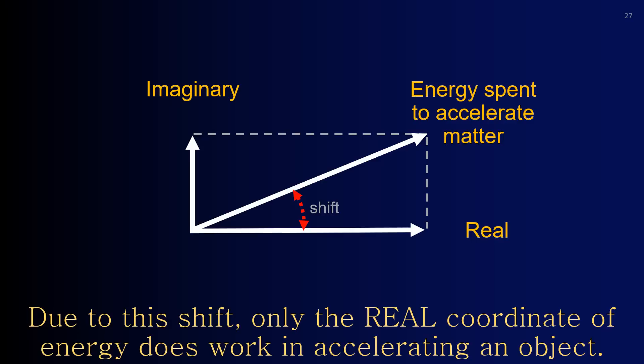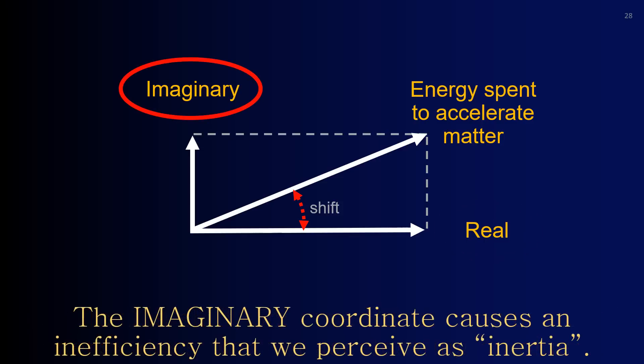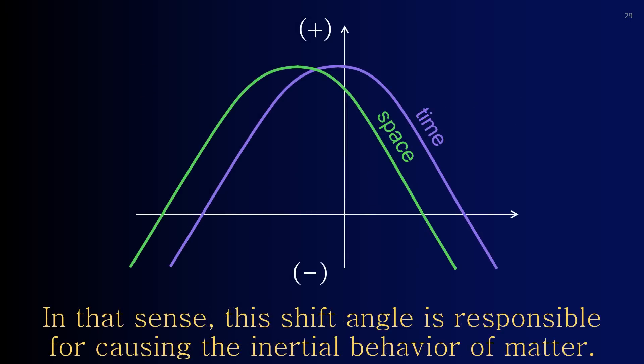Due to this shift, only the real coordinate of energy does work in accelerating an object. The imaginary coordinate causes an inefficiency that we perceive as inertia. In that sense, this shift angle is responsible for causing the inertial behavior of matter.